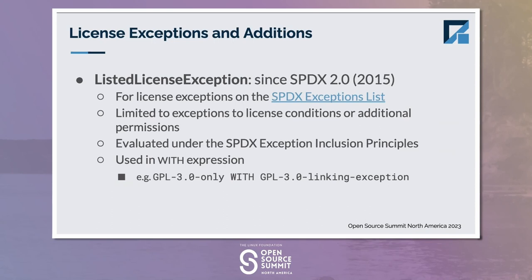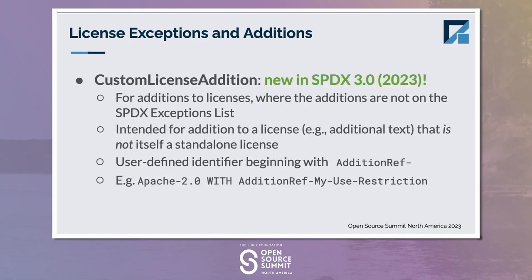For listed license exceptions, this is also something that's been around since SPDX 2.0 — the ability to use on the right side of a WITH expression any of the exceptions that are publicly defined on the official SPDX license list. Something that's been a topic of discussion for a long time is how to represent things that are not fully official exceptions to license conditions or additional permissions. So in SPDX 3.0, we're adding the ability to define custom license additions, which are essentially additional text that is not itself a standalone license. An example shown here uses AdditionRef to be used for additional text. Just to be clear, the exceptions list on the official license list is going to continue to be only official exceptions — things that are truly exceptions to license conditions or additional permissions.